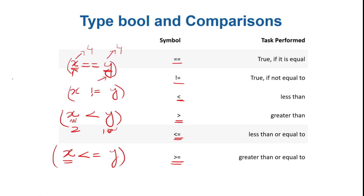In the next video we will move to Jupyter Notebook and play with these comparison operators, see their return types as booleans, and then combine them with 'and', 'or', and 'not' to do interesting stuff. In this video I just talked about the comparison operators, the boolean data type, and combining them with 'and', 'or', and 'not'. Hope to see you in the next video.